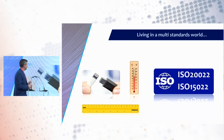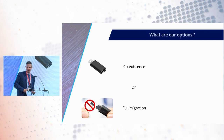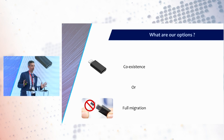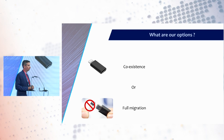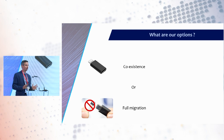As I said, we managed to survive in the day-to-day world using multiple standards, and we will probably survive in the financial industry as well. Going back to my phone example, what are our options? We have two main options. The first is coexistence — you can buy a small converter for around 5 euros on Amazon that lets you use both USB-C and Apple standards to plug your phone. The other option is to apply a full migration — getting rid of one standard entirely.